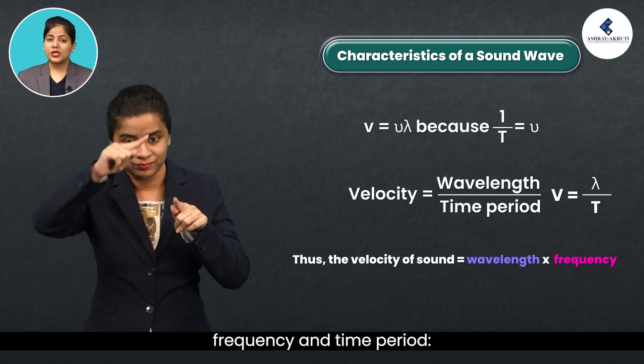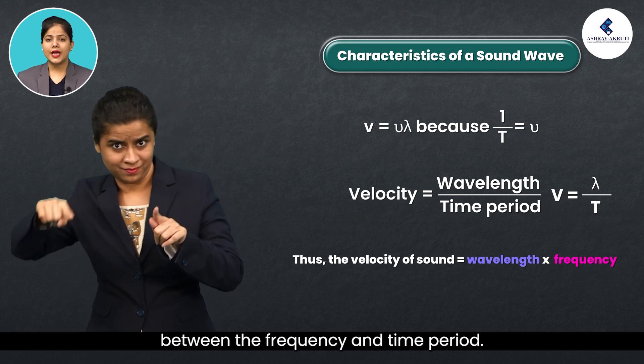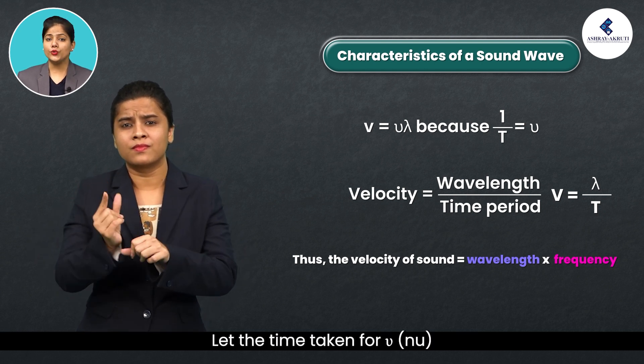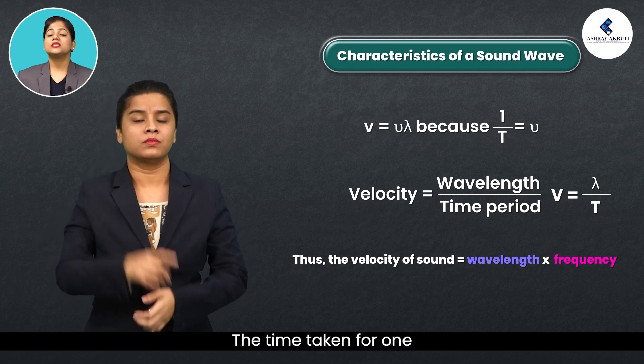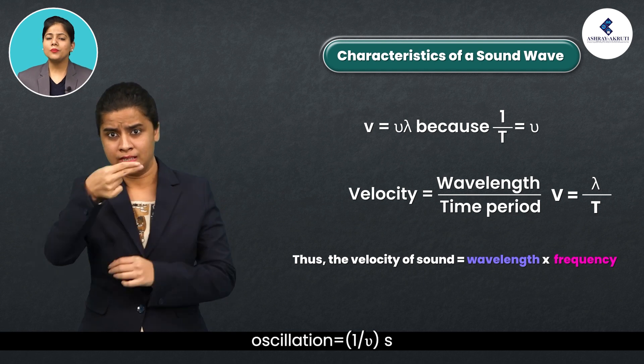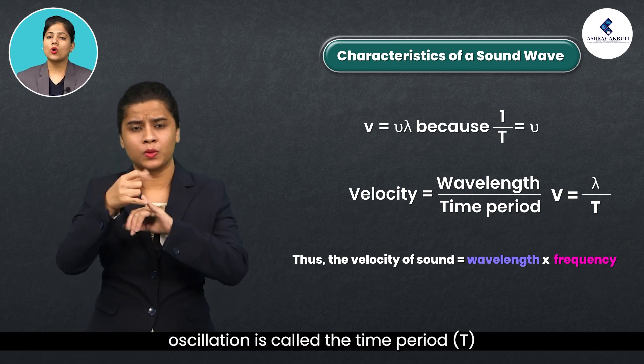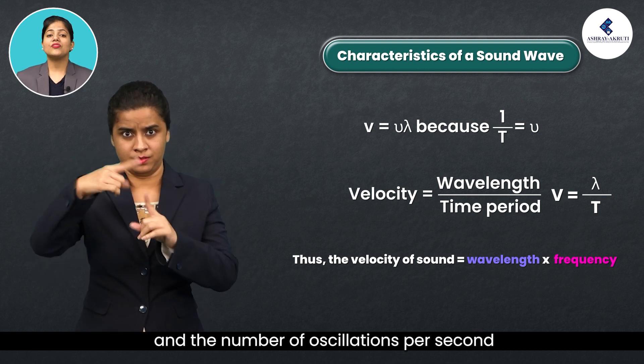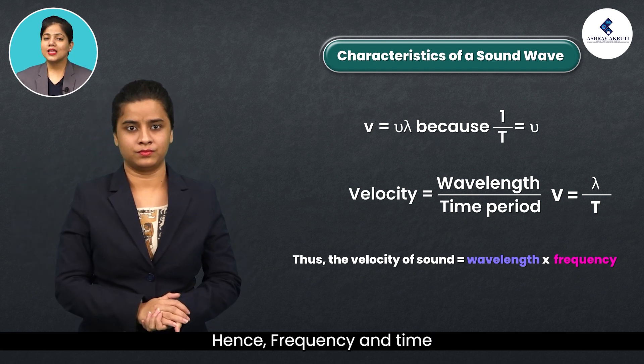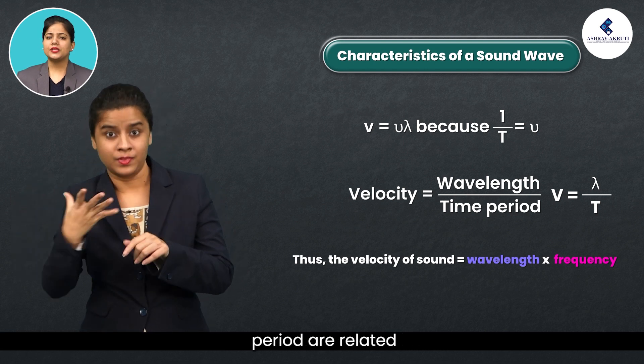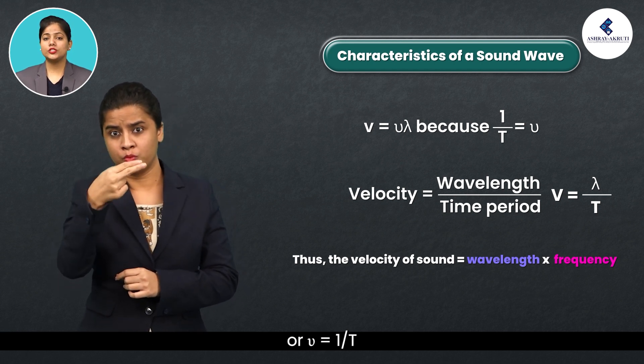Relation between frequency and time period. Let us find the relationship between the frequency and time period. Let the time taken for nu oscillations is equal to 1 second. The time taken for one oscillation is 1 by nu seconds. But the time taken for one oscillation is called the time period T and the number of oscillations per second is called the frequency nu. Hence, frequency and time period are related as T is equal to 1 by nu or nu is equal to 1 by T.